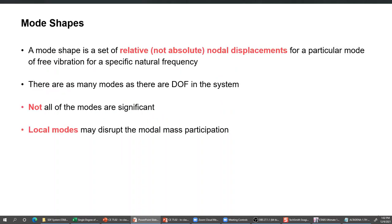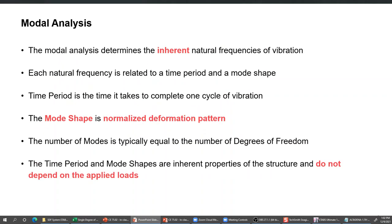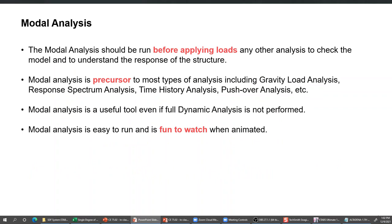Now I'll go directly to ETABS - if you run the eigenvalue analysis, how you can extract those mode shapes first, and then we will see that they are orthogonal. One of the properties which mode shape vectors have is called the orthogonality property. Let me quickly review it here so that when I show you in Excel you will be able to relate.